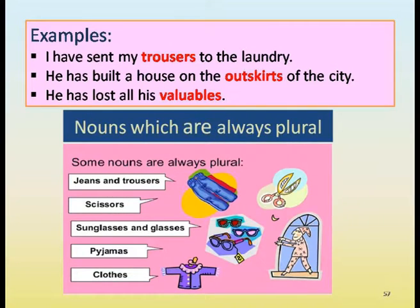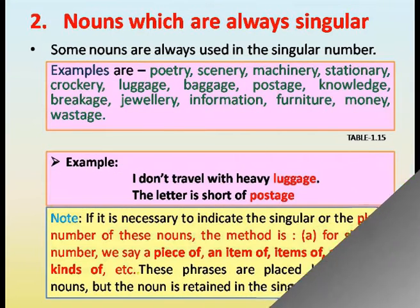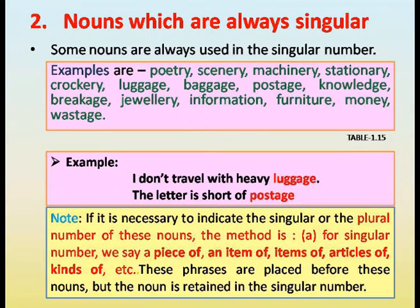Examples: I have sent my trousers to the laundry. He has built a house on the outskirts of the city. He has lost his valuables. Some nouns are always used in the singular number. Examples: poetry, scenery, machinery, stationery, crockery, luggage, baggage, postage, knowledge, jewellery, information, furniture, money, wastage. I don't travel with heavy luggage. The letter is short of postage.